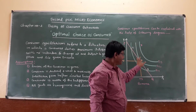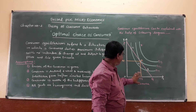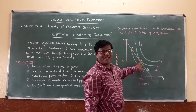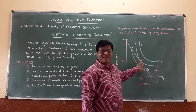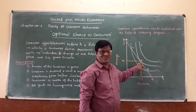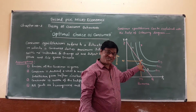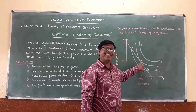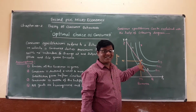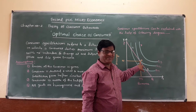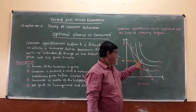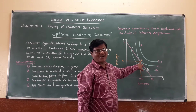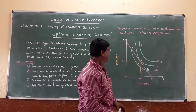At point E, the price line and the indifference curve for banana and mango are equal to each other. E is the equilibrium of the consumer. The consumer wants to remain at the higher level of satisfaction within his limited income. IC2 therefore indicates the equilibrium of the consumer at point E.